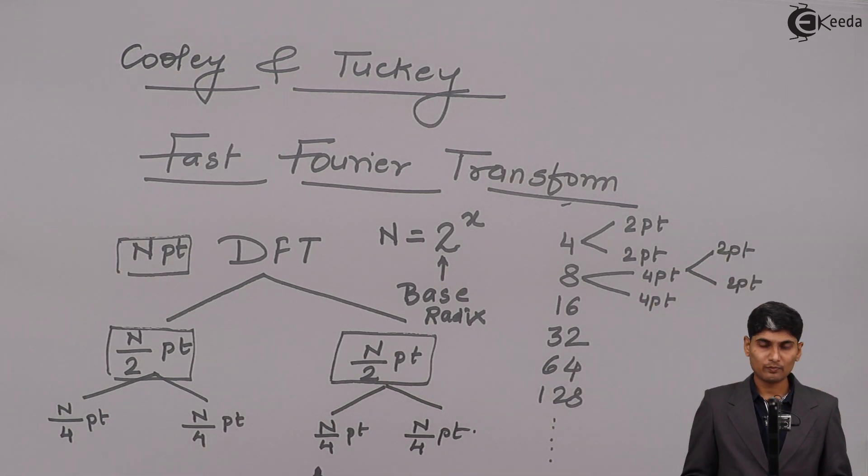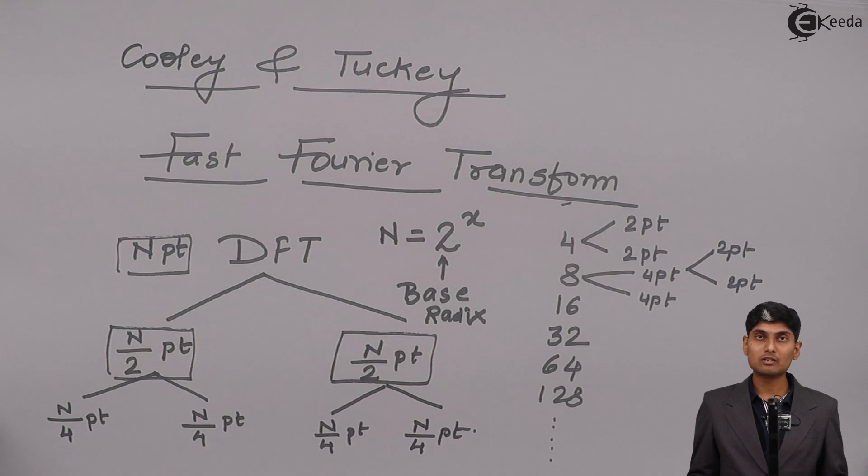So all prime numbers you can take as the basis like two, three, five, seven, eleven. Such numbers can be the base of a DFT and then you can break up a given sequence into that many number of subsamples or sub DFTs. So this was a basic algorithm developed by Professor Cooley and Tukey.